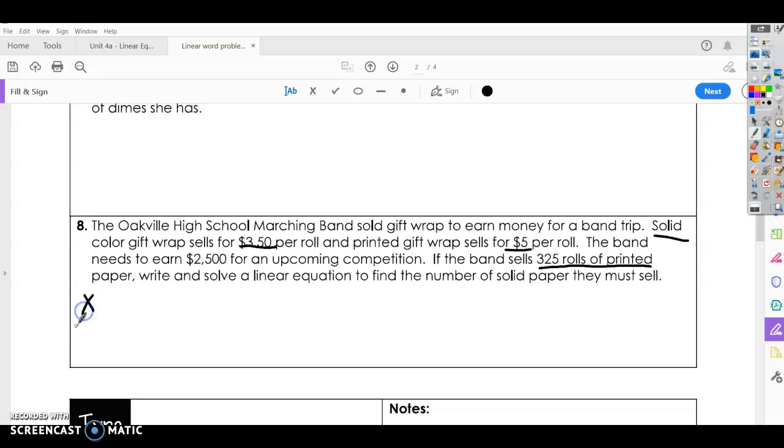Alright, let's start with our variables. We're going to use X and Y because that's just easy. Alright, so we've got solid. Let's use X for our solid color gift wrap. And let's use Y for our printed. Alright, so to write an equation, solid gift wrap costs $3.50. So $3.50 times X number of rolls of solid gift wrap plus $5 per roll of printed gift wrap needs to equal $2,500 so we can afford to go to our band competition.